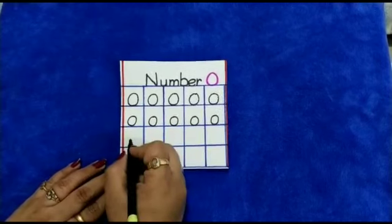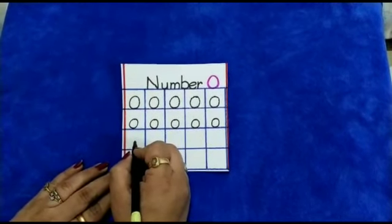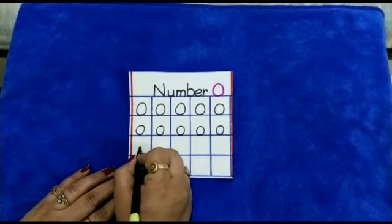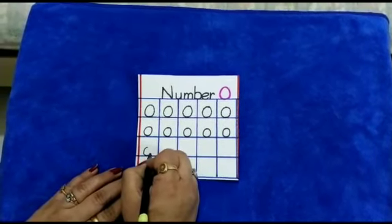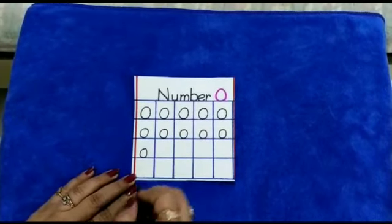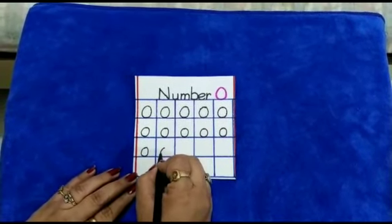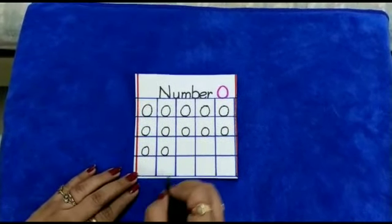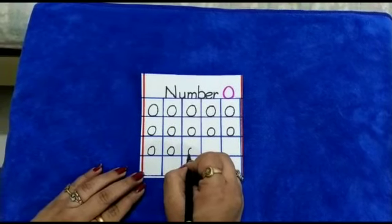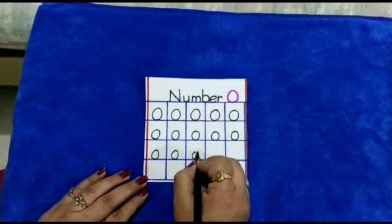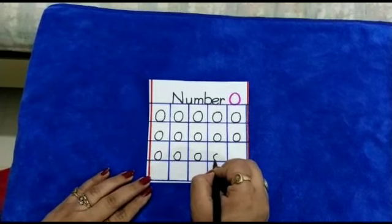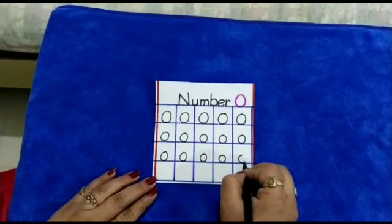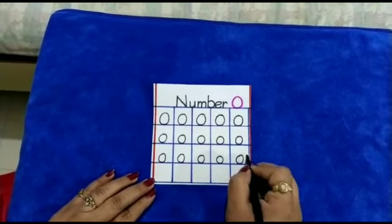Now kids, we will revise how to write number 0 on our own. First we will make a forward curve, come down and make a reverse curve. Once again: forward curve, come down and make a reverse curve. Once again: forward curve, come down, reverse curve. Forward curve, come down, reverse curve. Forward curve, come down and make a reverse curve.